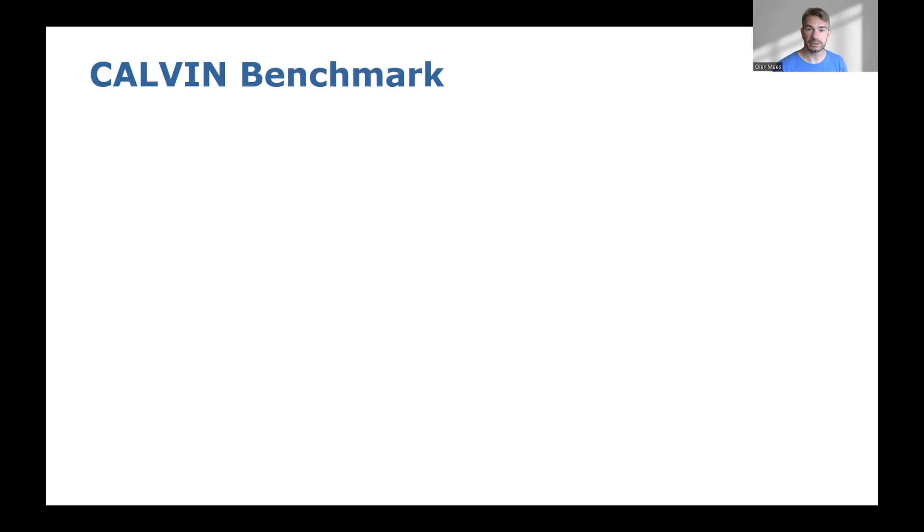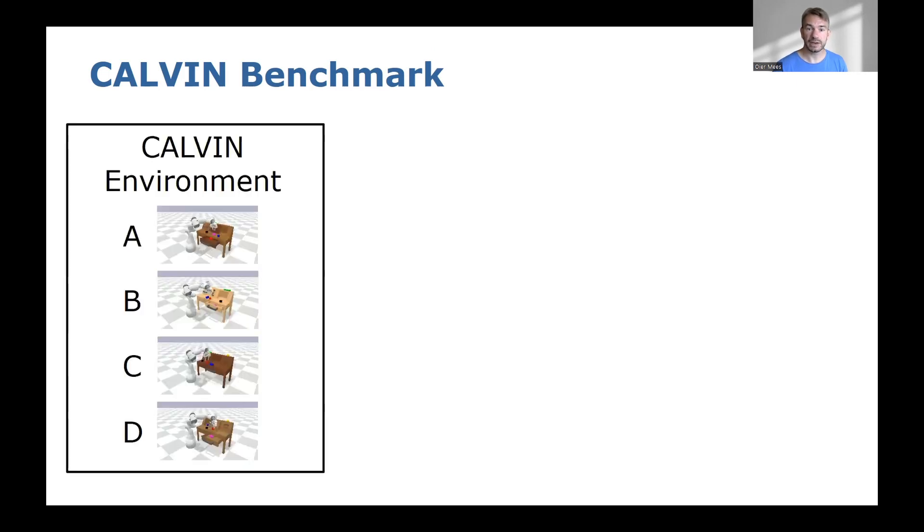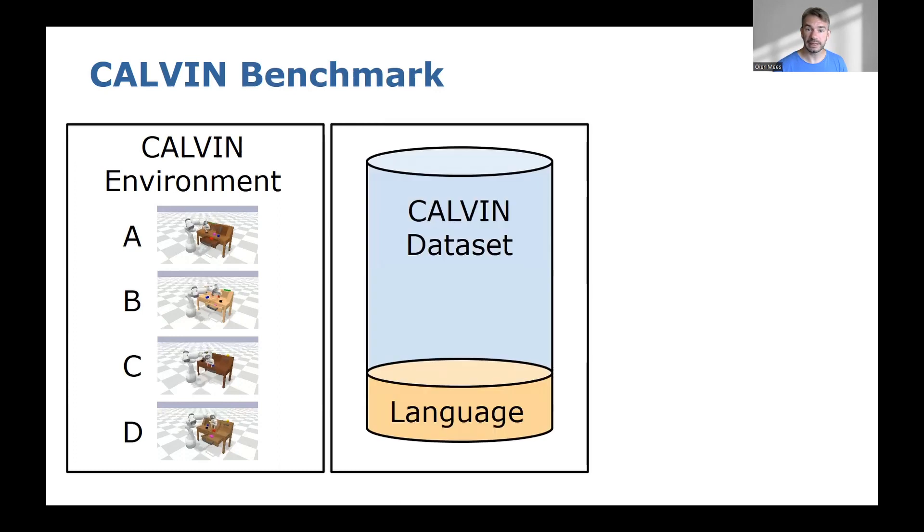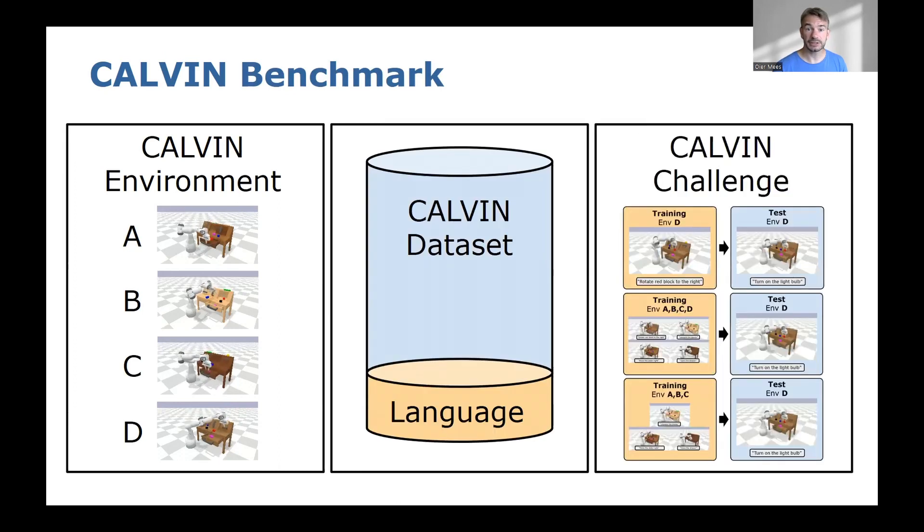The aim of the CALVIN benchmark is to evaluate the learning of long-horizon language-conditioned continuous control policies. It consists of three key components: the CALVIN environment, the CALVIN dataset, and the CALVIN challenge.